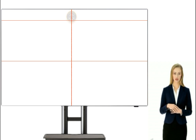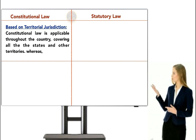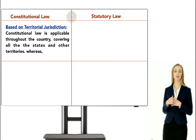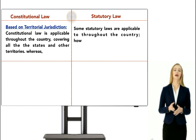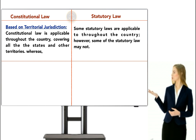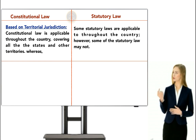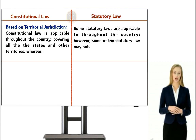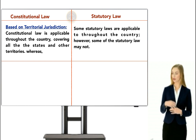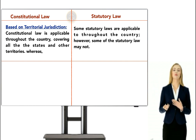The fourth difference is based on territorial jurisdiction or applicability. Constitutional law is applicable throughout the country, covering all states and territories. Whereas some statutory laws are applicable throughout the country, some may not be. For example, remember Schedule 7 of the constitution, which talks about the union list, state list, and concurrent list. The law legislated on a subject mentioned in the state list is applicable to that state only.